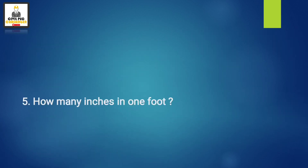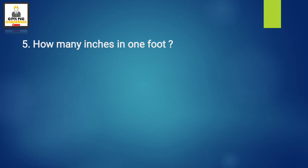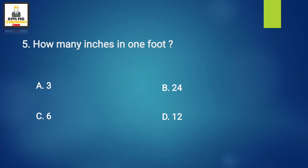Next question: the unit of RF (representative fraction) — Option A: centimeter, Option B: centimeter square, Option C: centimeter cube, Option D: none of these. Please comment your answer. Next question: how many inches in one foot? Option A: 3, Option B: 24, Option C: 6, Option D: 12. Please comment your answer based on the previous discussion.